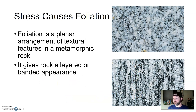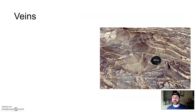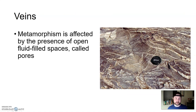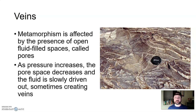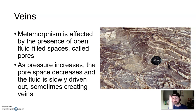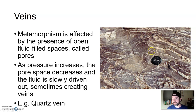And that's something called foliation — an indicating texture of metamorphic rocks. Another common feature in metamorphic rocks are veins of material. Metamorphism is affected by the presence of open, fluid-filled spaces called pores. As pressure increases — deeper you go down in Earth — the pore space decreases, and any fluid that's in there is slowly driven out, sometimes creating veins squirting out through these rocks. For instance, what you see here are a lot of quartz veins. So foliation and veins are very good indications of metamorphic rocks.